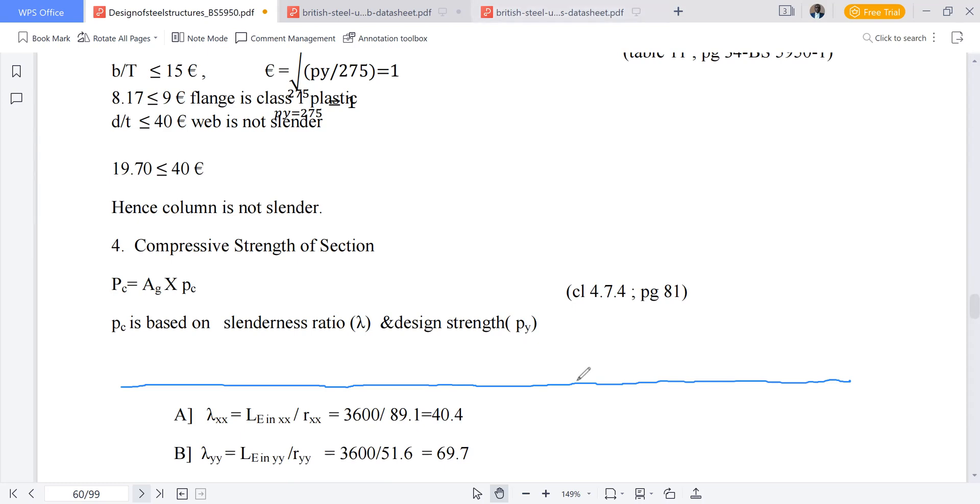Let me illustrate. We have one axis and the other axis. Along this we have the slenderness ratio, then here we have py. Remember, this is Table 24c or curve c. If my value here, so let's continue.